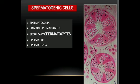Spermatids are rounded cells with spherical nuclei, arranged as clusters and located very close to the lumen of the seminiferous tubule. These spermatids undergo certain morphological changes to get converted into spermatozoa. This process of conversion of spermatids to spermatozoa is called spermiogenesis. The resulting spermatozoa are motile and elongated. These spermatozoa then undergo maturation and capacitation in order to achieve fertilization.